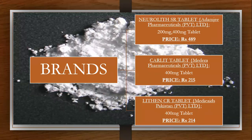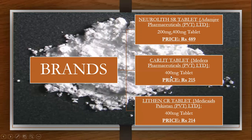Three brands of lithium are highly popular and available in Pakistan. Number one is the Neuralith SR tablet, manufactured by Adunji Pharmaceuticals Private Limited. Number two is the Carlet tablet, produced by Madeira Pharmaceuticals Private Limited. Number three is the Licosil CR tablet, produced by Medicaid Pakistan Private Limited. The first is available in 200 mg and 400 mg tablets, whereas the other two are only available in 400 mg tablets. The price of Neuralith is 489 rupees, Carlet is 215 rupees, and the third is 214 rupees.